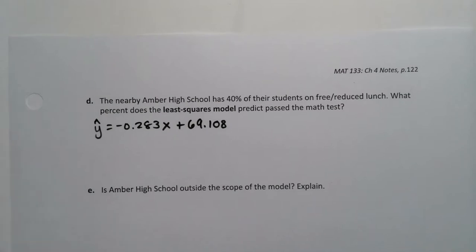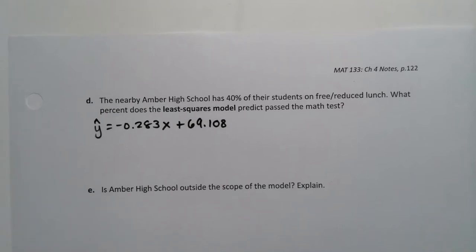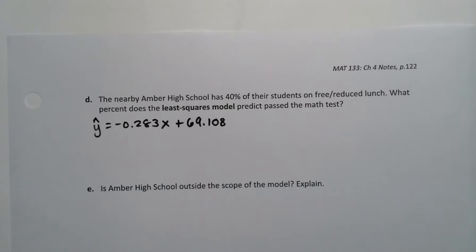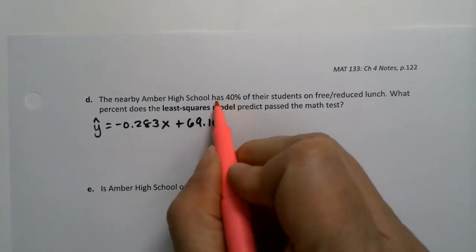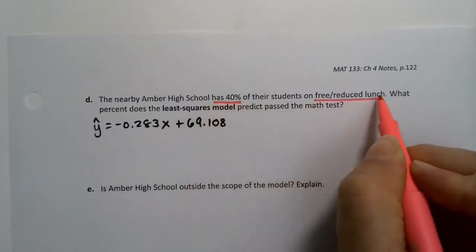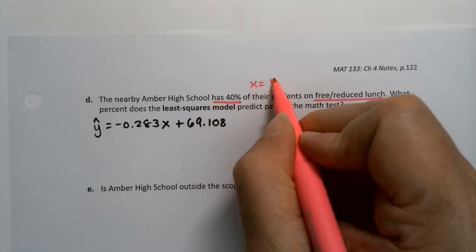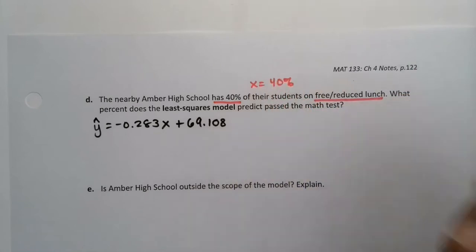And so when they tell us Amber High School has this, what they're telling us is an x value, right? They're telling us that, hey, look at that, they've got x equals 40, well 40%.